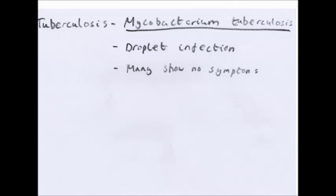Being a bacteria, TB should be curable with antibiotics, but there are many reasons why it hasn't been eradicated. TB was a real problem years ago, then became less of a problem, but has come back. In 2005, about 8.8 million new cases were recorded and 1.6 million died. It is rising particularly in sub-Saharan Africa, Asia, and also Eastern Europe.